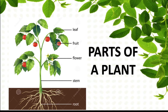Do you know what are the parts of a plant? It is the leaf — can you see the leaf? Yes. And then comes the fruit. Then the flower — can you see the yellow flower? Yes. And the stem. And the roots. So these are the different parts of a plant.